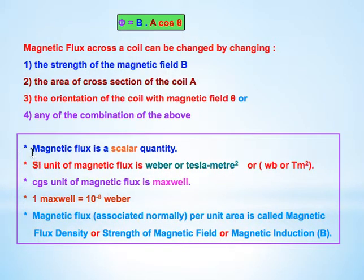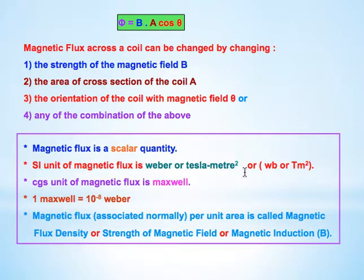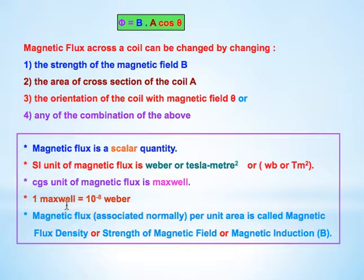Magnetic flux is a scalar quantity. The SI unit of magnetic flux is the Weber, which can also be written as Tesla·meter². Tesla is the unit of magnetic field and meter² is the unit of area. The CGS unit of magnetic flux is Maxwell. One Maxwell equals 10⁻⁸ Weber, and one Weber equals 10⁸ Maxwell. Weber is the SI unit and Maxwell is the CGS unit.